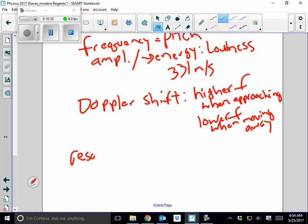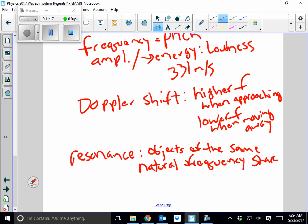And then lastly, we have resonance. Resonance is objects of the same natural frequency share energy. That's why opera singers can make glass break. That's why I can make those bottles hum with a tuning fork because they have the same natural frequency. So it caused the molecules inside it to vibrate because they were taking energy from the sound wave. So please make sure you go practice some problems in Castle Learning.